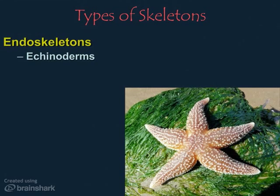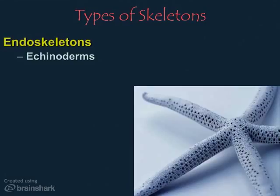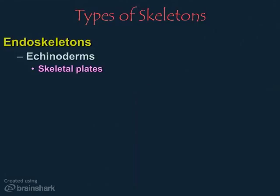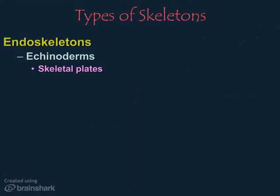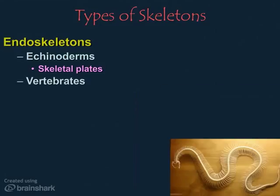Endoskeletons are structural support systems inside the body. Echinoderms such as sea stars and sand dollars have an endoskeleton made of calcified plates, usually joined together, as seen here in the sea star skeleton. This is also what you're really finding when you find sand dollars on the beach — you're finding the sand dollar skeleton.